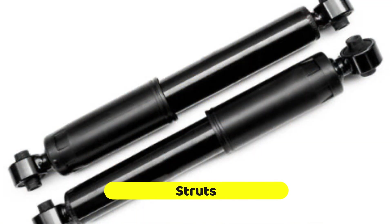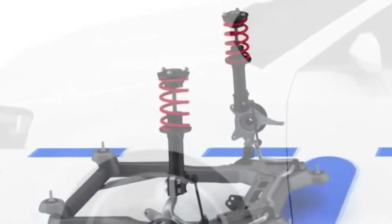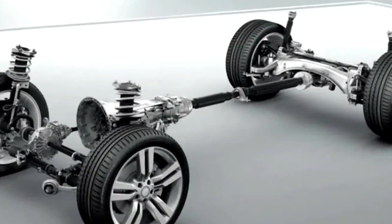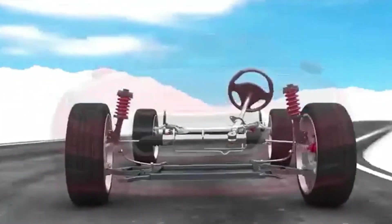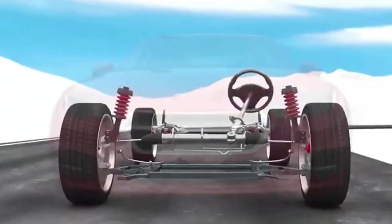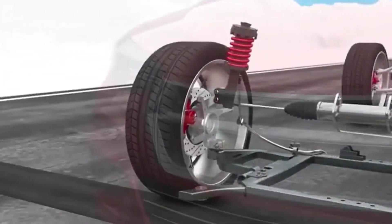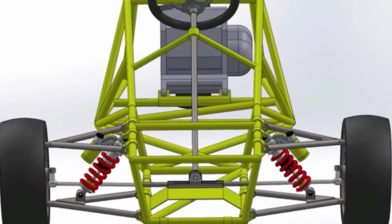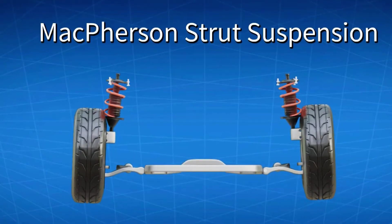Struts are more complex components that combine the functions of shock absorbers and structural supports. They provide damping like shocks, but they also support a portion of the vehicle's weight and provide structural rigidity to the suspension system. Struts are commonly found in front-wheel drive vehicles and some rear-wheel drive vehicles, and they are often part of a McPherson strut suspension design.